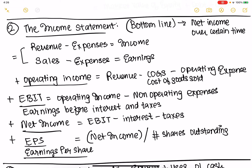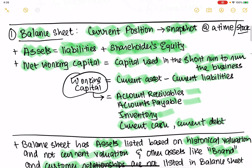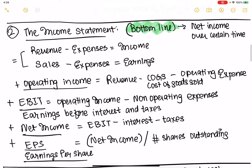The next one is the income statement. The income statement is the bottom line. Unlike the balance sheet, which is a point-in-time stock measure, the income statement is a flow measure, which says: in a given certain period of time, what is the net income that was made?